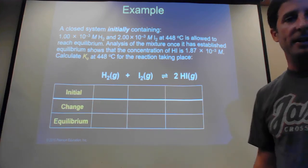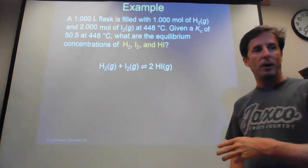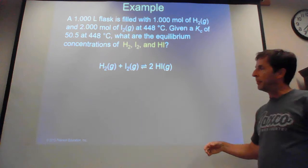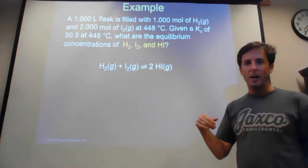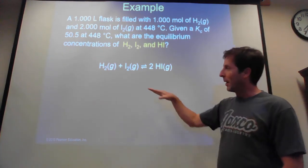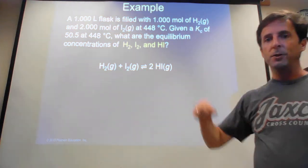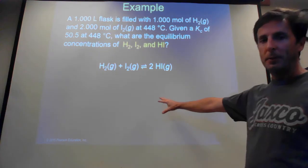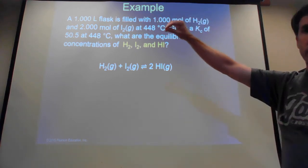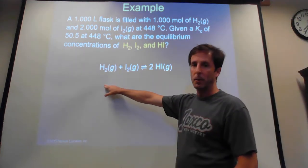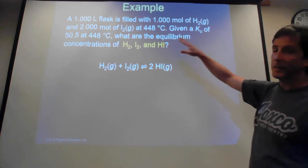For the next problem, we have the same reaction: H₂ + I₂ → 2HI, and we set up another ICE table — Initial, Change, Equilibrium. ICE tables are written with molarity values, so if you're given moles you need to divide by volume to get molarity. In this case we have 1 mole of H₂ in a 1-liter flask, so the initial H₂ value is 1 M. Initial I₂ is 2 moles divided by 1 liter, giving 2 M.